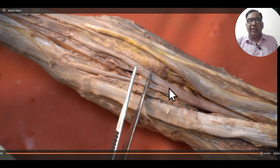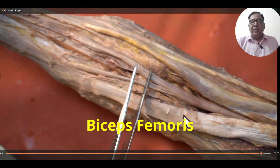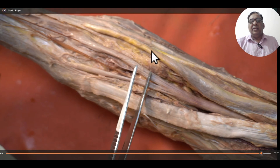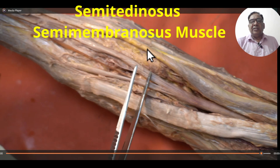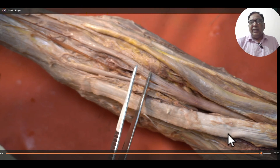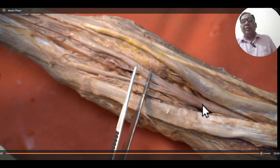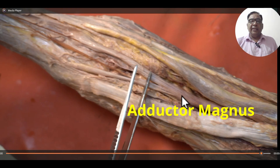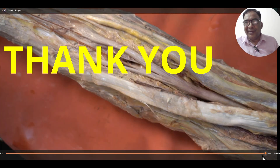Now the relations of the sciatic nerve in the back of the thigh: laterally it is related with the biceps femoris muscle; medially it is related with the semitendinosus and semimembranosus muscles; superficially it is related with the biceps femoris muscle, which crosses it from medial to lateral; and deeply the nerve lies on the adductor magnus muscle. Thank you very much for watching my video.